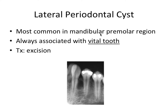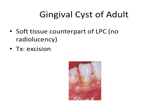Next we have the lateral periodontal cyst, most common in the mandibular premolar area. This one is always associated with a vital tooth — contrast that to the radicular cyst, which is always associated with non-vital teeth and centered over the apex. The gingival cyst of the adult is basically the soft tissue counterpart of the lateral periodontal cyst, located between the roots of teeth in the mandibular premolar area. Because it's only in soft tissue, there will be no radiolucency.